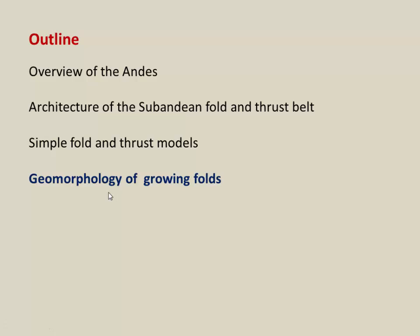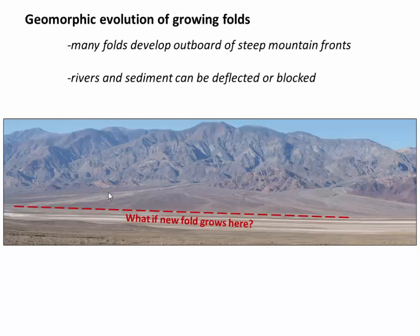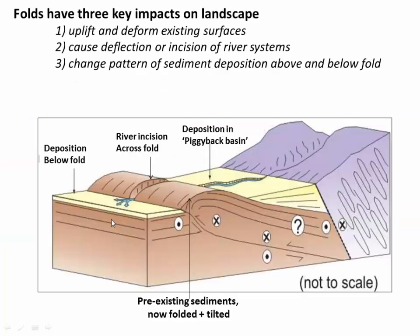Now let's finish the video by looking at how fold growth affects the landscape — how it interacts with rivers and alluvial fans in particular. Many folds grow above thrust faults that have just stepped outward from a mountain front. Imagine a mountain front in Death Valley with a big alluvial fan across it. If a growing fault underneath develops a fold whose axis runs along a line in front of that fan, we're essentially going to develop a ridge in front of the alluvial fan. The rivers and streams that feed the fan are going to be blocked, having to go around or depositing sediment as the new anticline ridge grows.